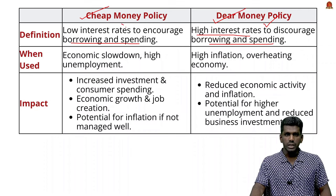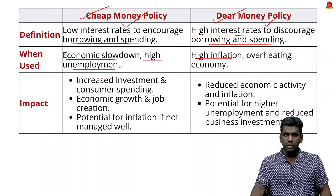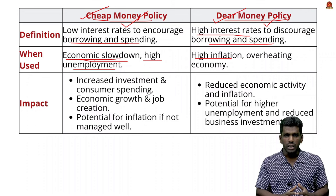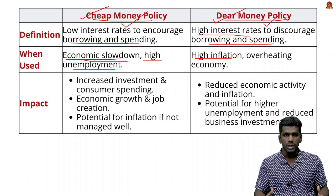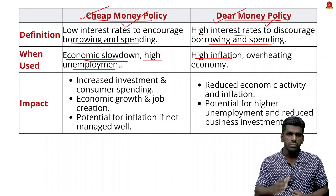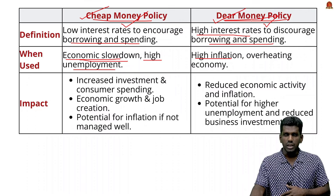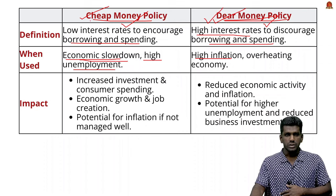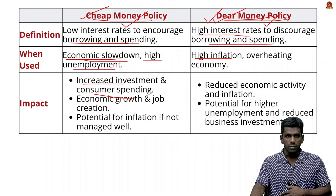There are two kinds of monetary policy: cheap money policy, where interest rates are lowered to encourage borrowing and spending used during economic slowdowns or high unemployment; and dear money policy, where interest rates are increased to discourage borrowing and spending, used to control high inflation. With cheap money policy, more money is available in the market. With dear money policy, money availability is very less and interest rates are very high.